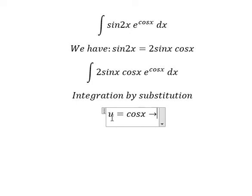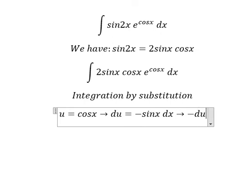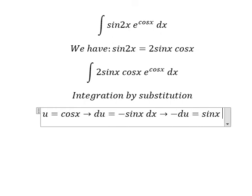Later that, we differentiate for both sides. And we have du equals to negative sin x dx. Because we don't have the negative sign in here, so we need to put the negative to the left. And we have negative du equal to sin x dx.